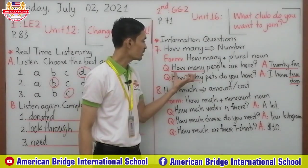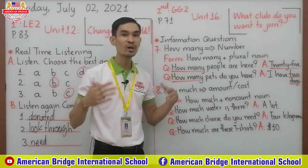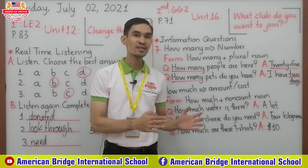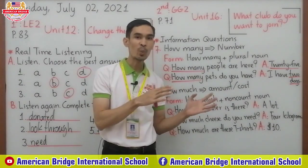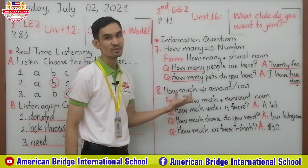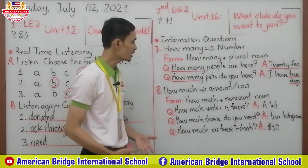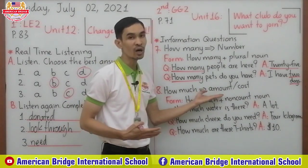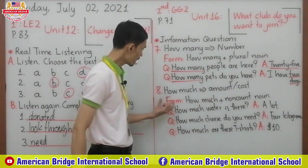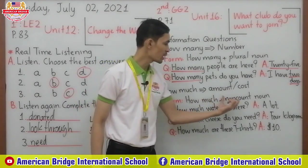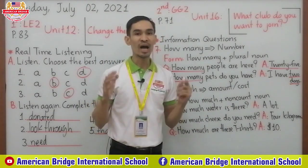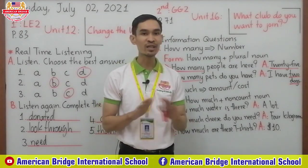Remember: when you use 'how many,' you want to know the number, so you must answer with a number. Now let's continue to number eight — how much. We use 'how much' to ask about the amount or cost — the price of something. Look at the form: how much + non-count noun, also called uncountable noun.